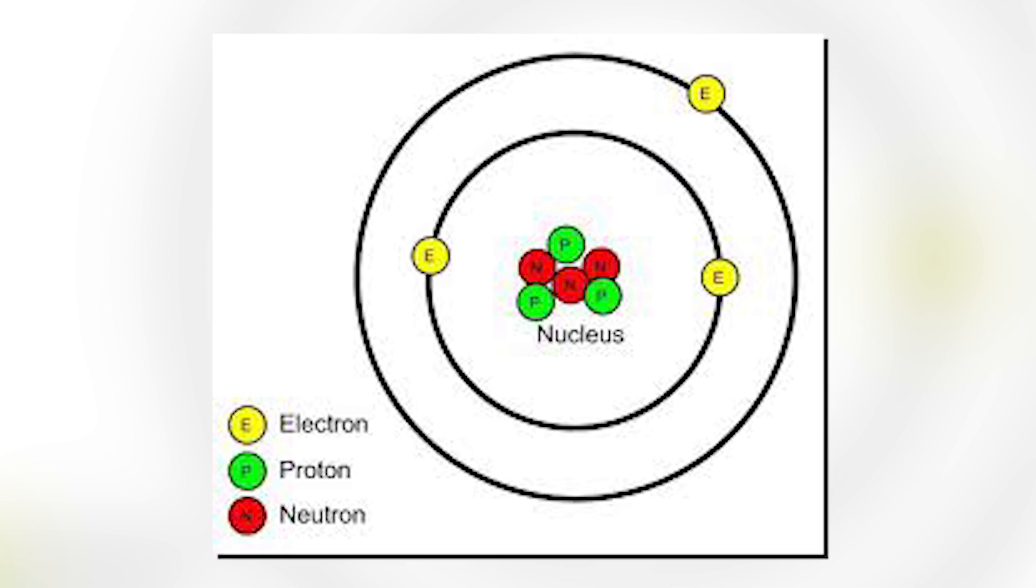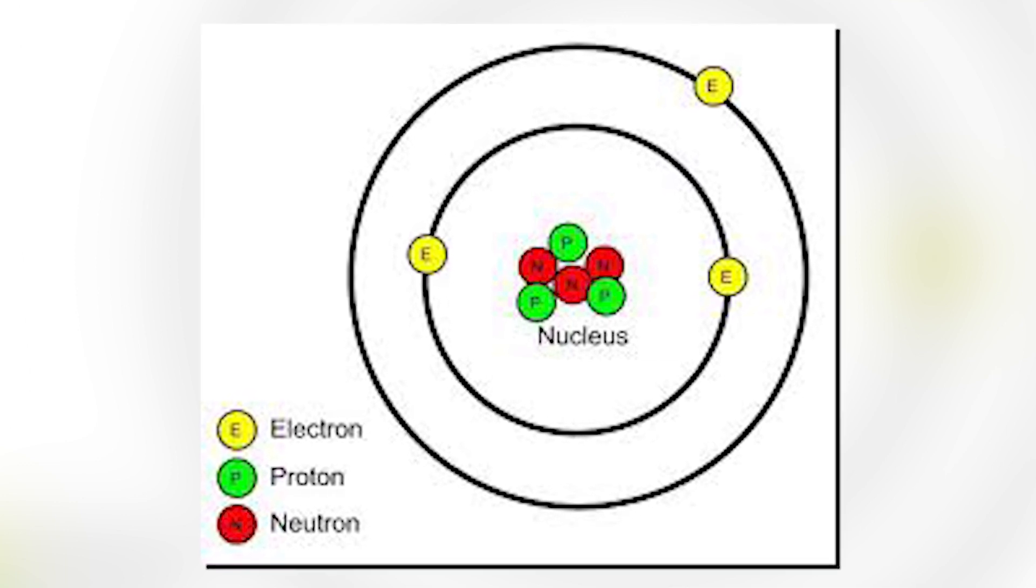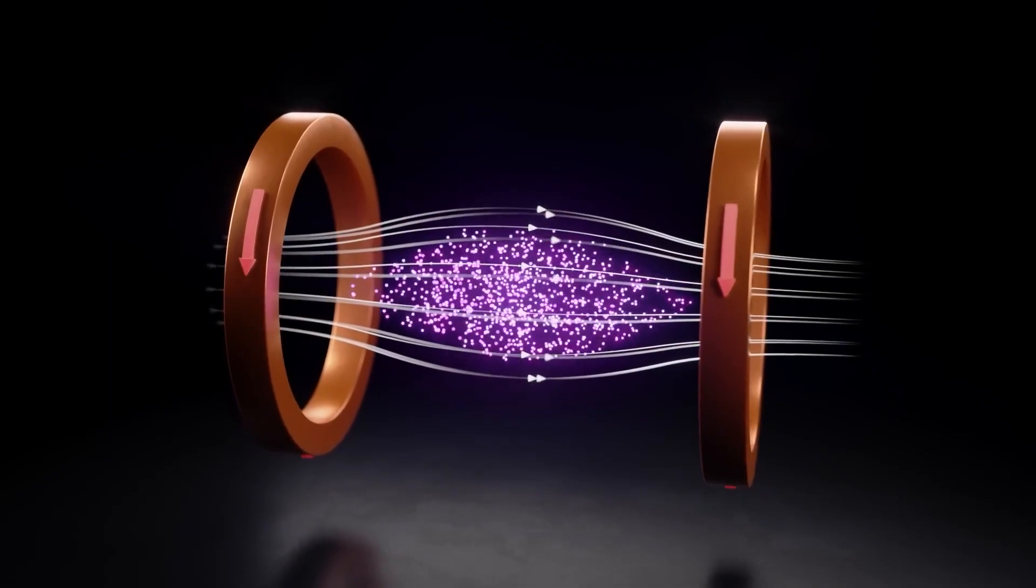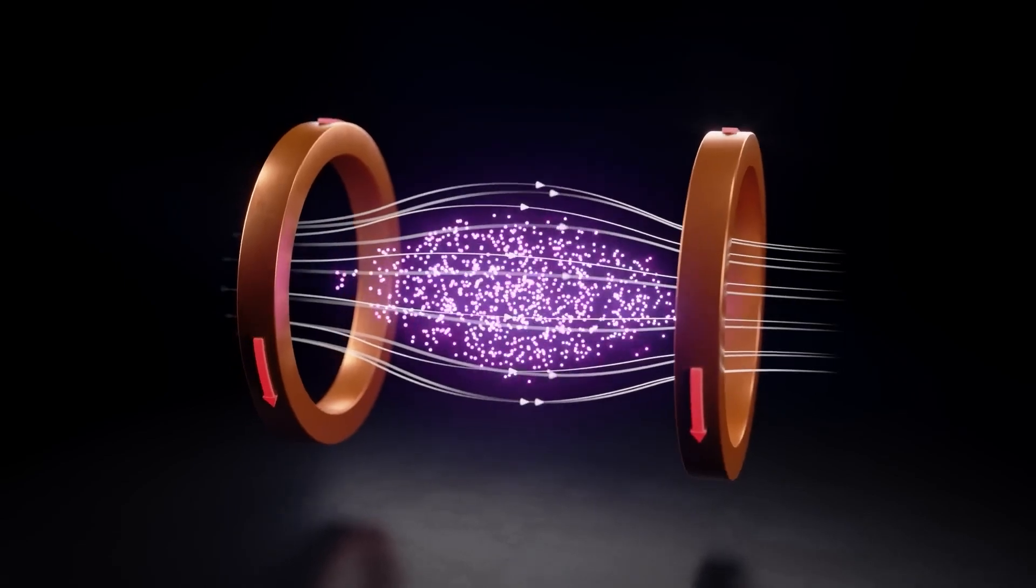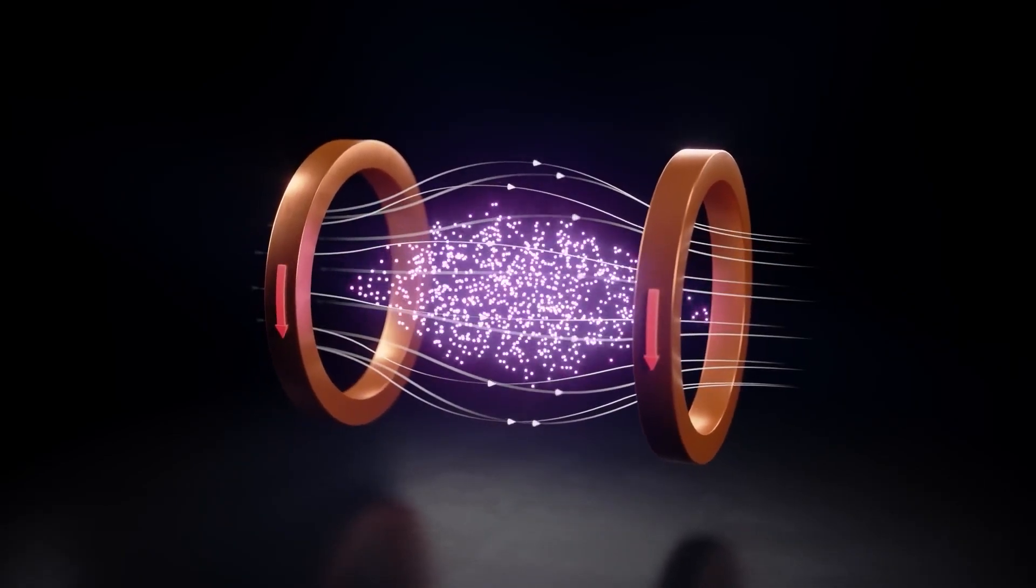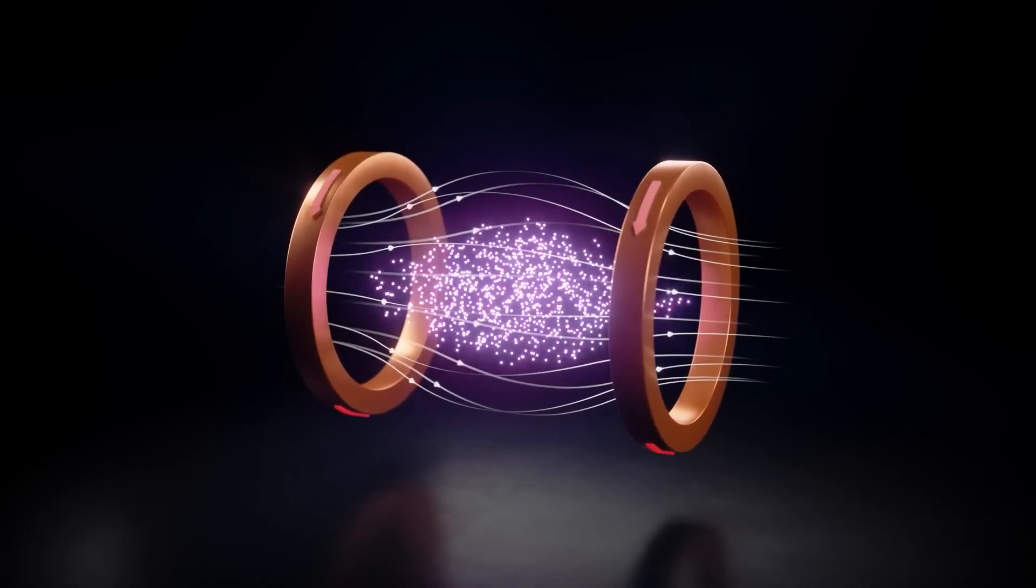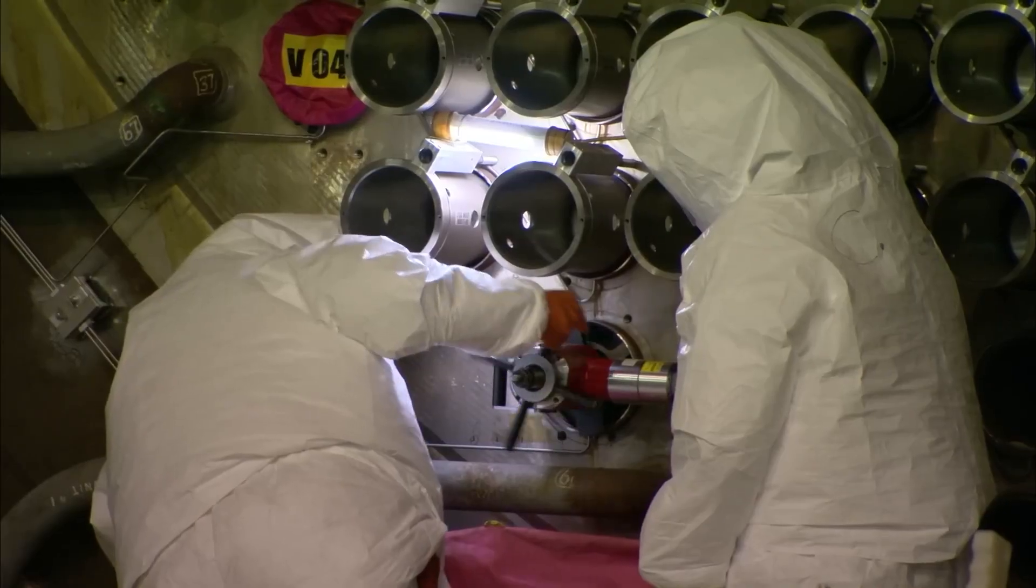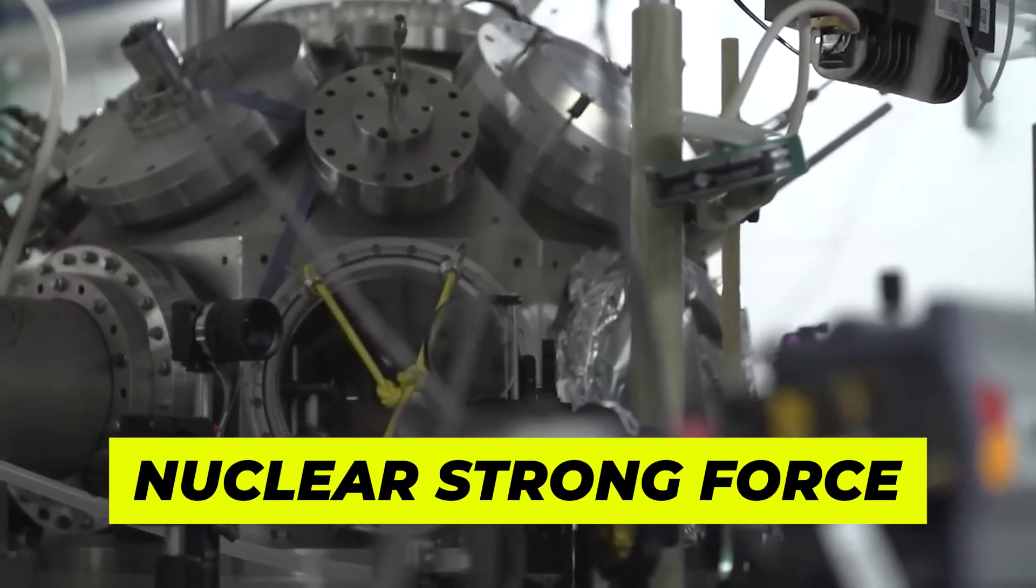However, the positively charged nuclei repel each other upon approaching too closely. The temperature of the plasma dictates the speed of charged particles. When the collision speed overrides electrostatic repulsion, the nuclei draw close enough to experience a potent attractive force called nuclear strong force, leading to fusion.